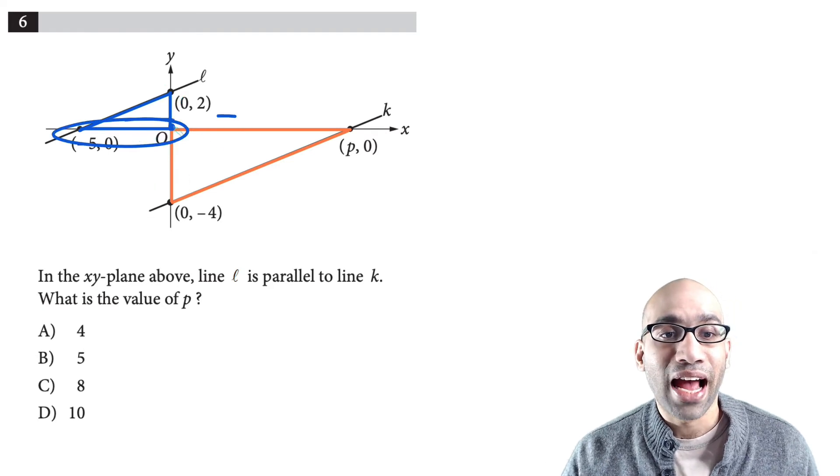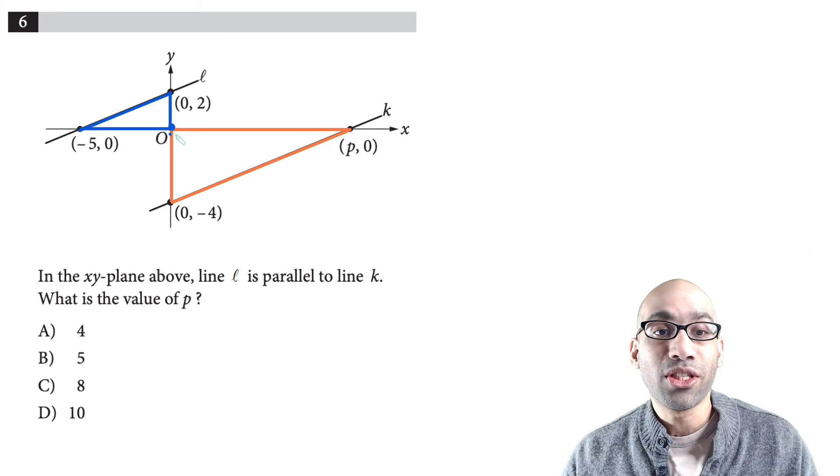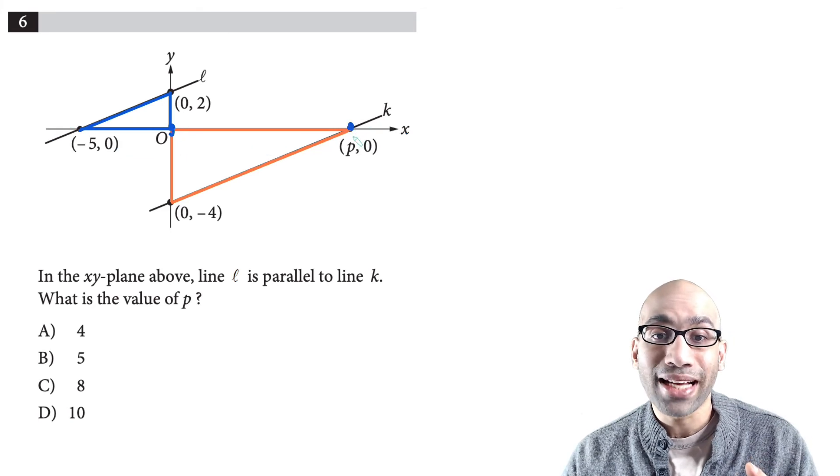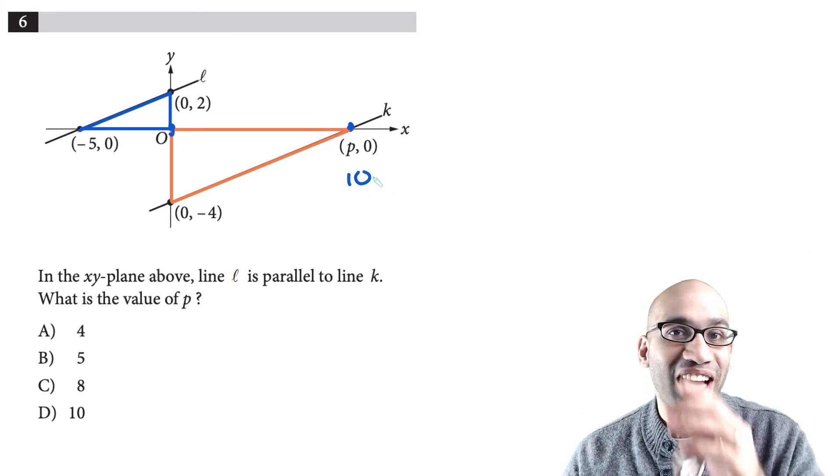This length is 5 and so this length has to be double which means it's 10. And so the distance from the origin of this point, the x coordinate has to be positive 10. And you're done.